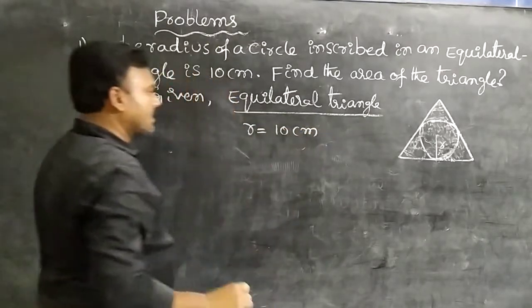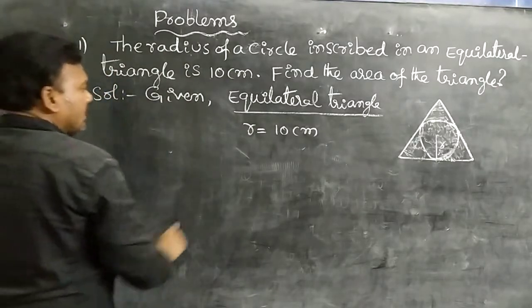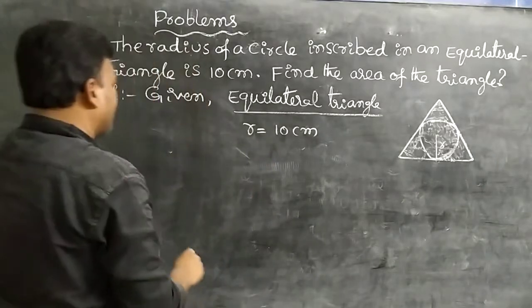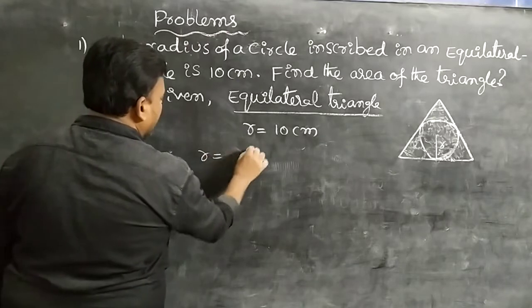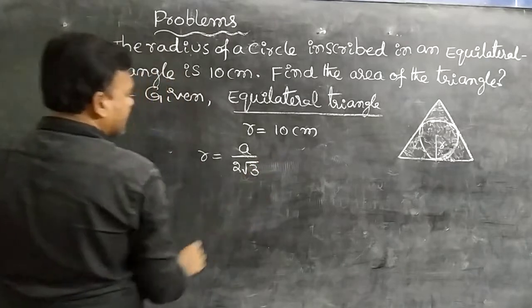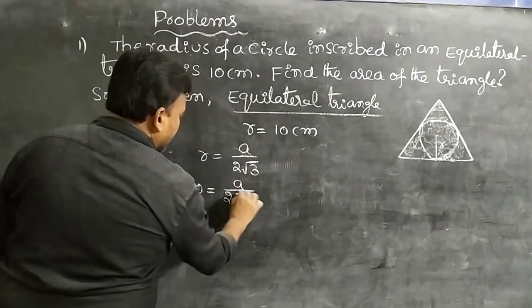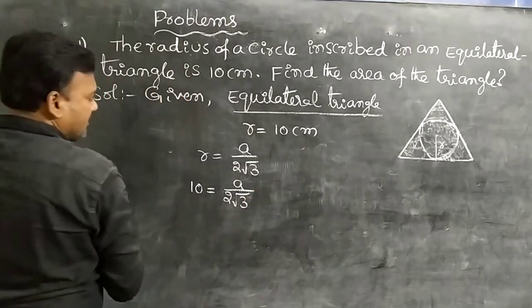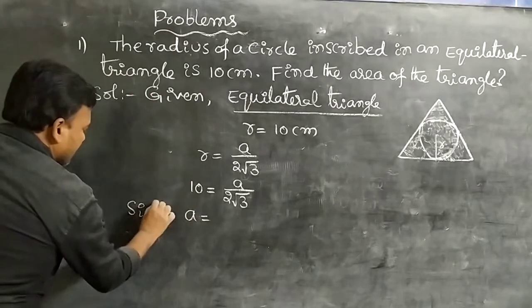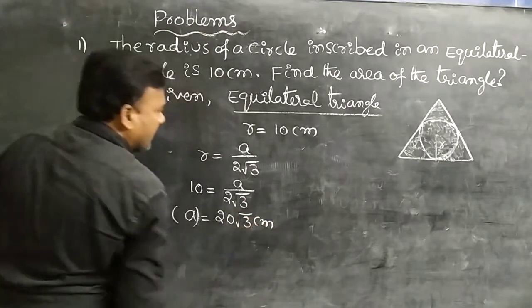Transferring to the left side: 10 × 2√3 = a. Therefore, side a = 20√3 centimeters.